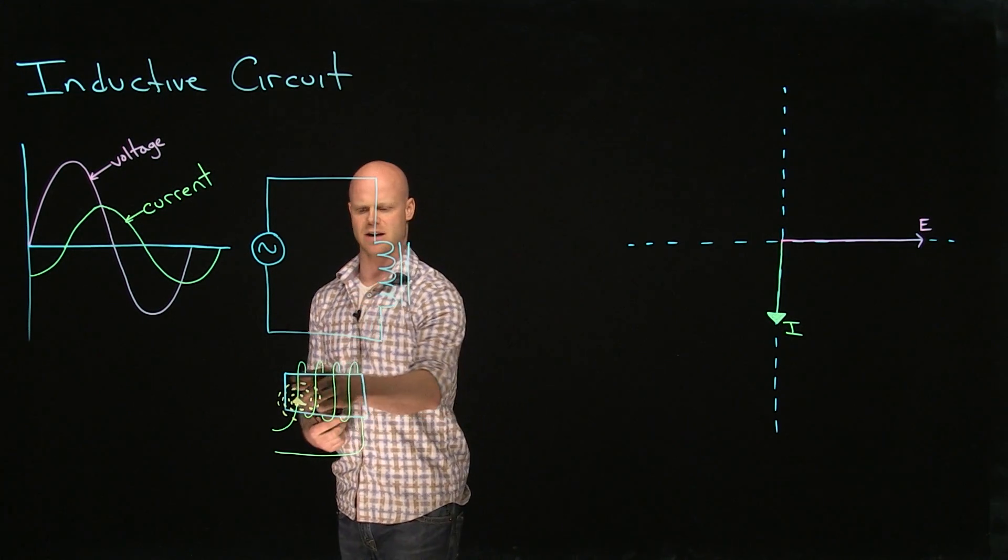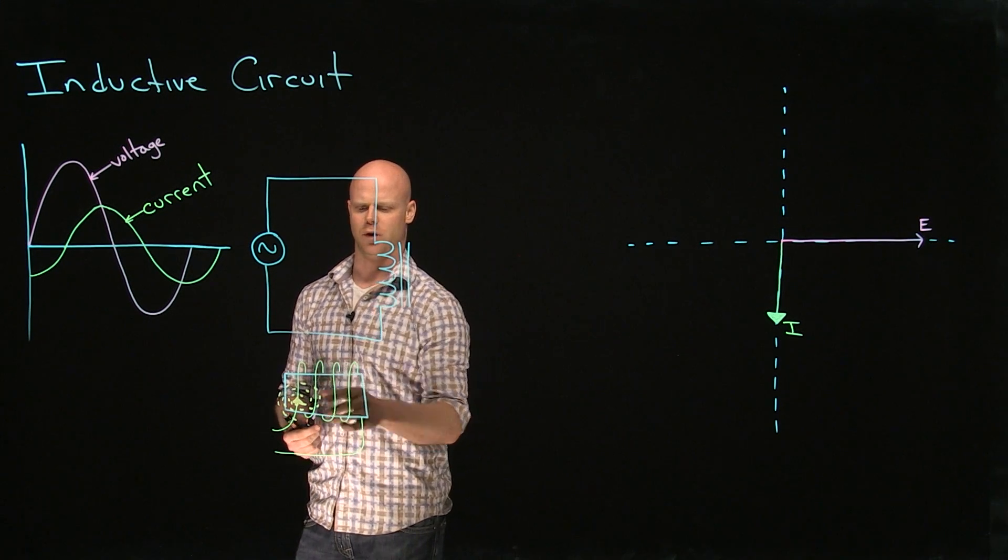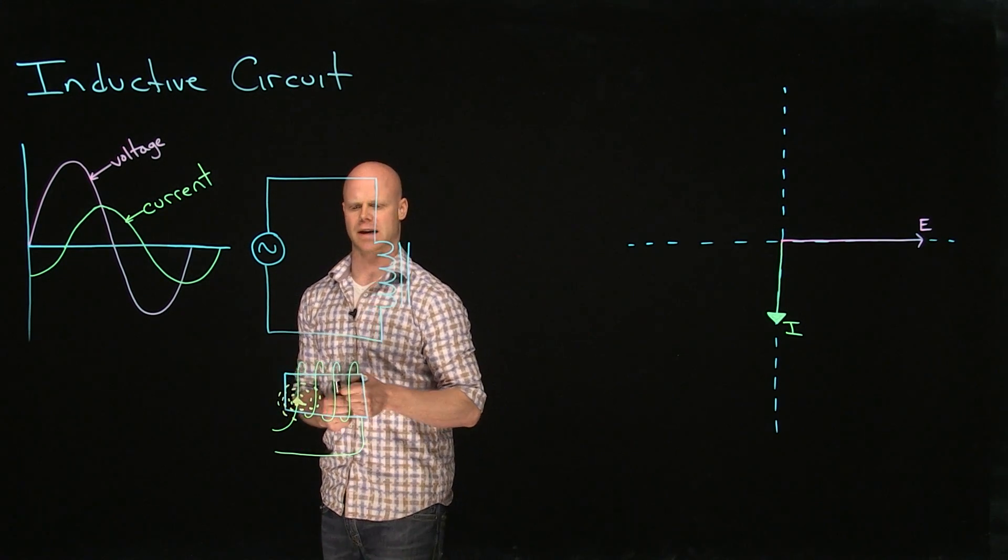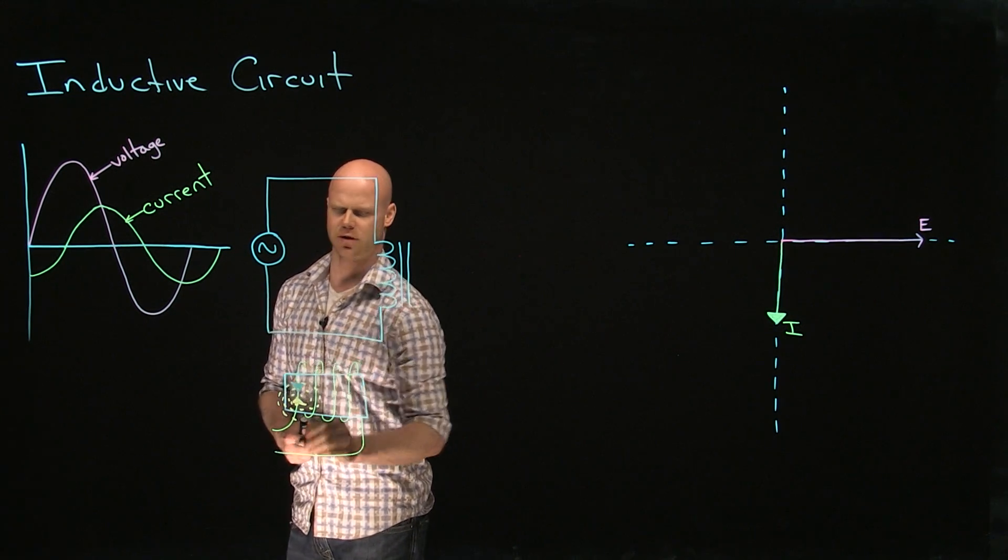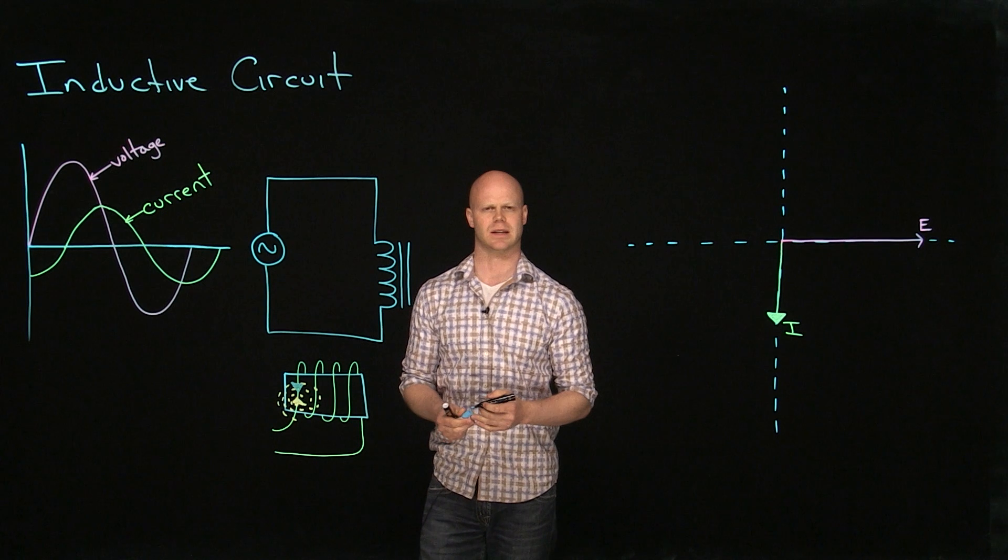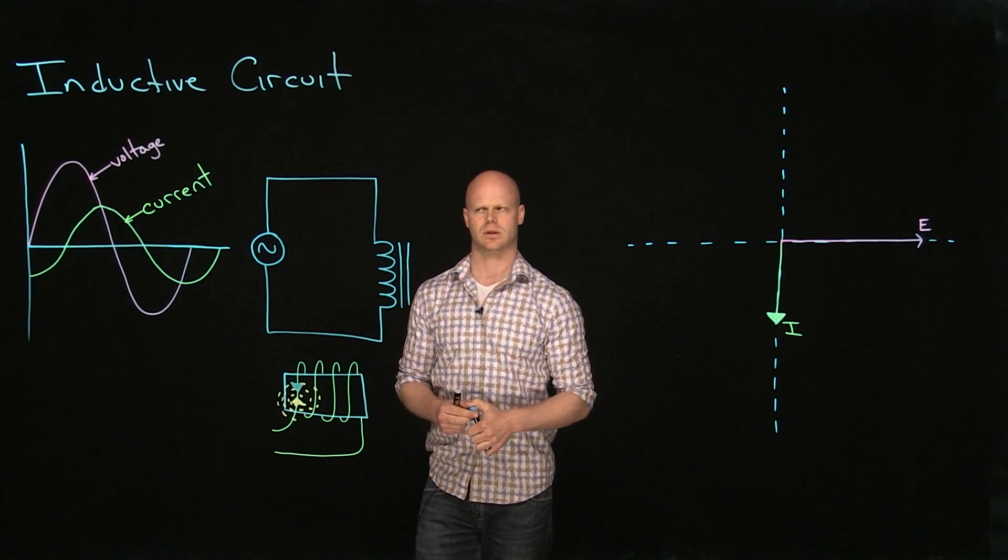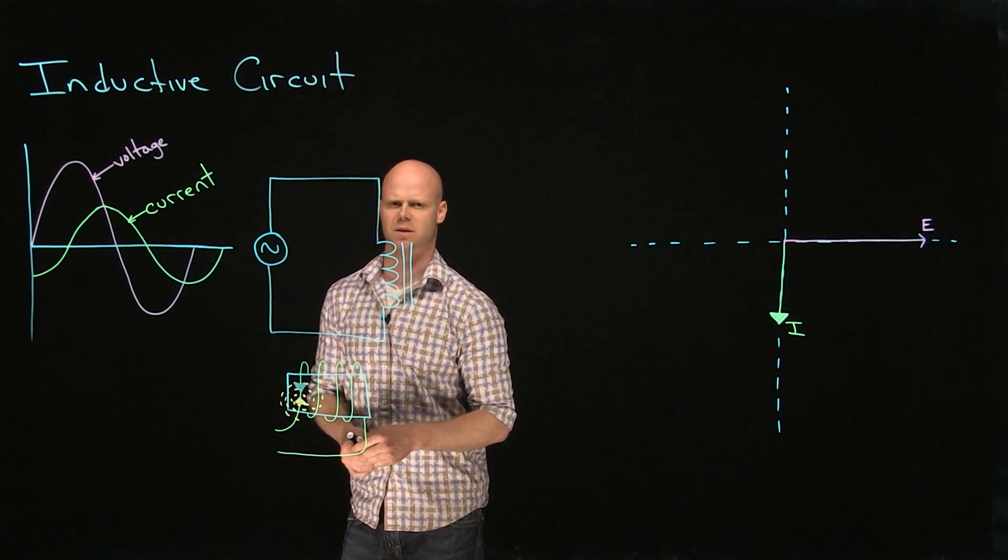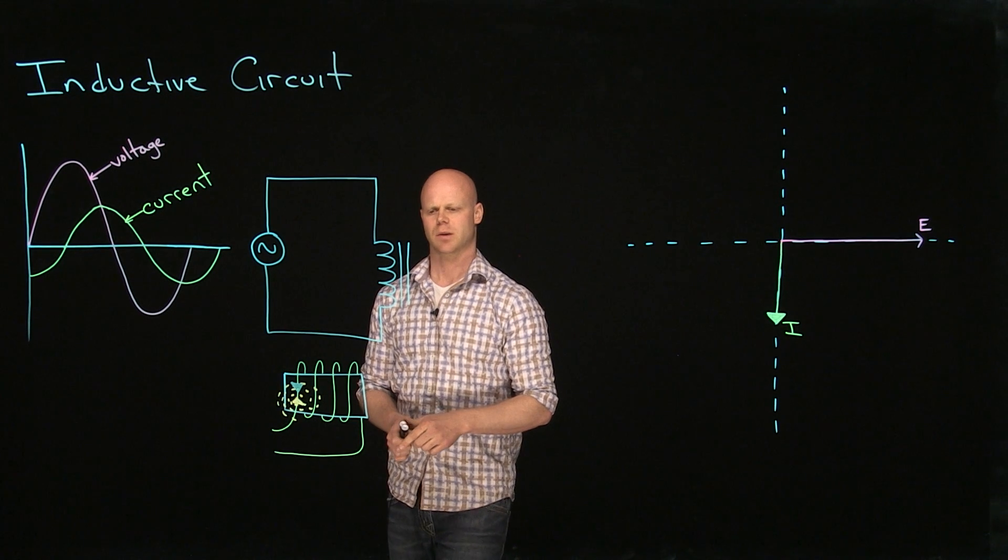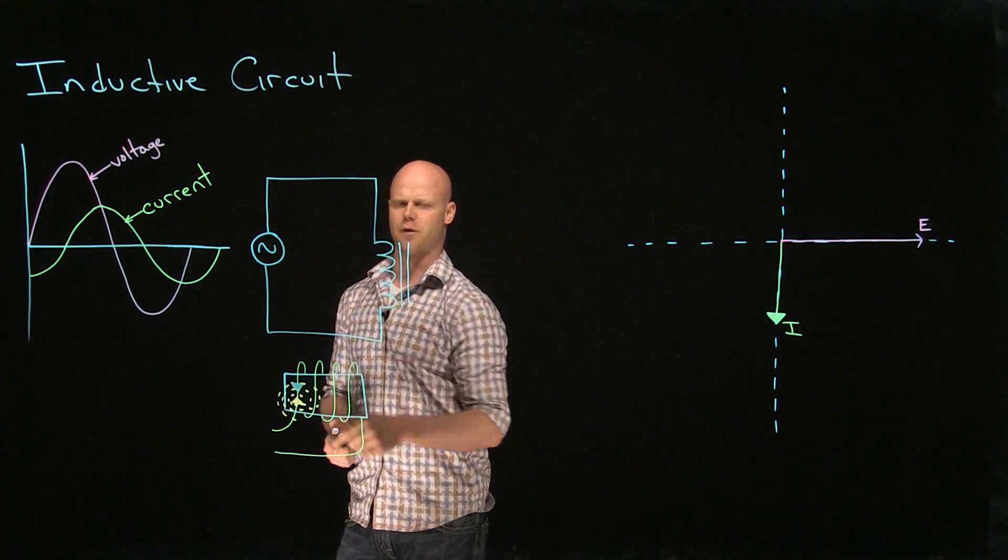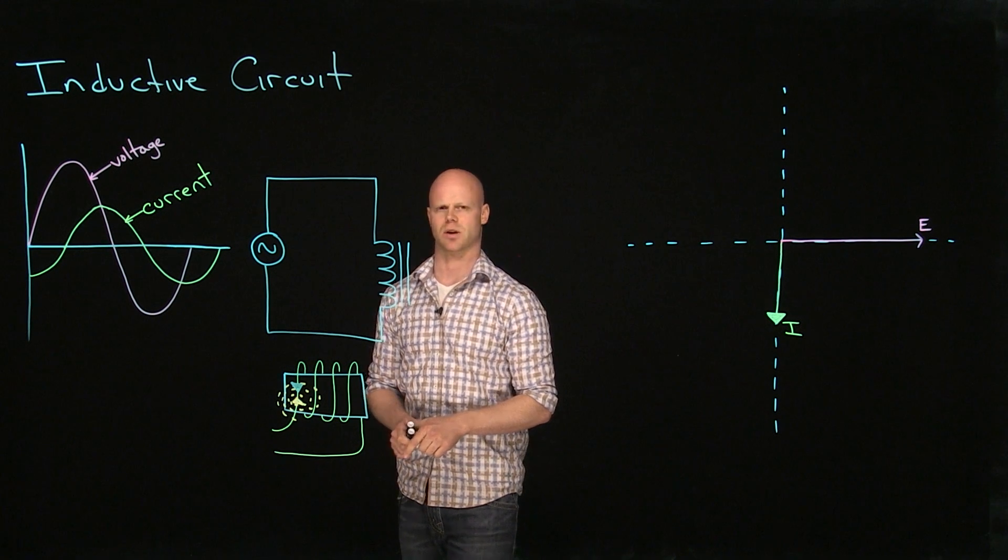So what we're meaning is, as I have current entering that coil, the voltage that is produced from that counter-EMF will cause a current to flow in the opposite direction. What this does is limit current within that coil. That causes a phase displacement, or a displacement in time between voltage and current, because it takes a period of time now for that current to reach its maximum value through that coil.